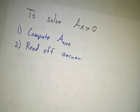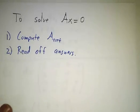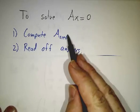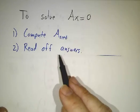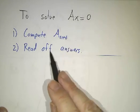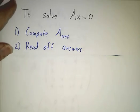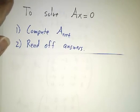So in our example, the way we solve Ax equals 0 is we first compute the reduced row echelon form, and from the reduced row echelon form, you can basically read off the answers. So the rest of the video is how to read off the answers.